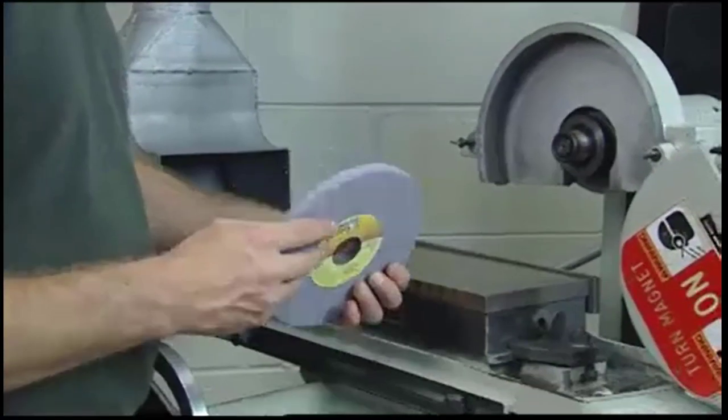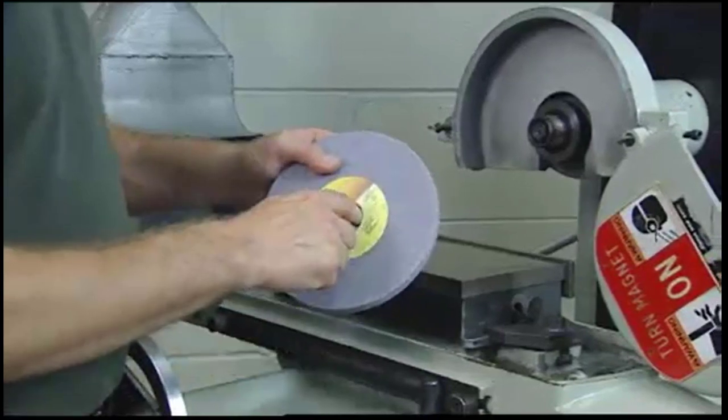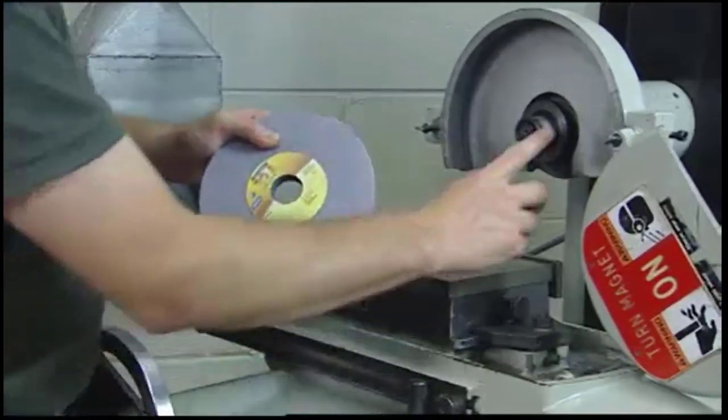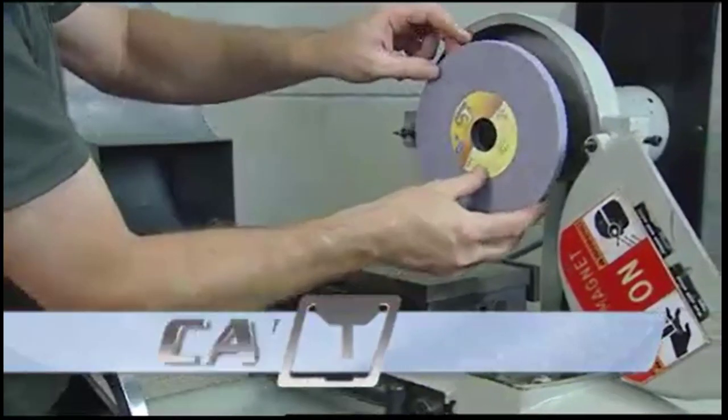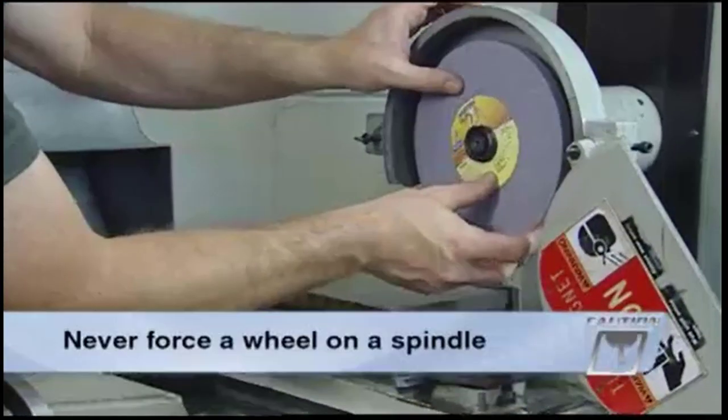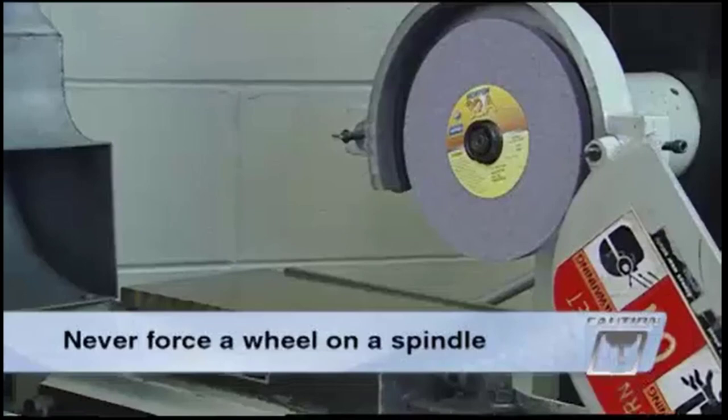After ring testing, make sure that there is a blotter on each side of the wheel. Then, clean both the hole and the grinder spindle, and slide the wheel on the spindle. Keep in mind that you should never force a wheel on a spindle. It should slide on freely.